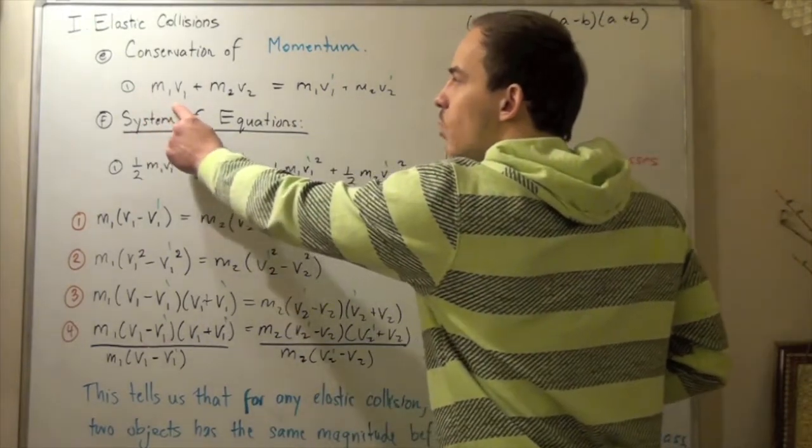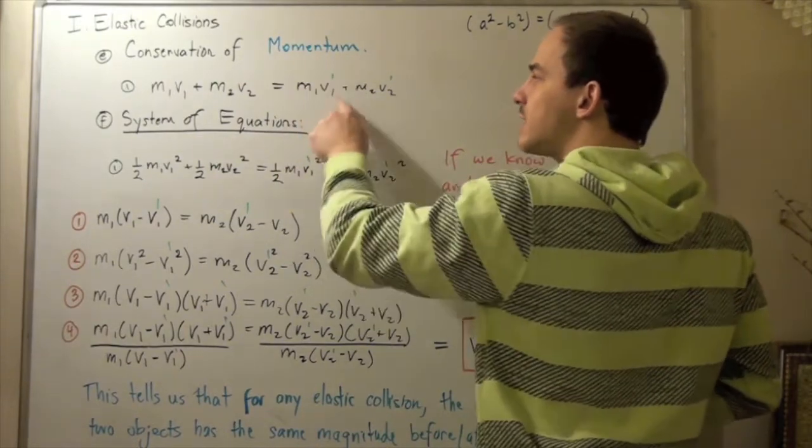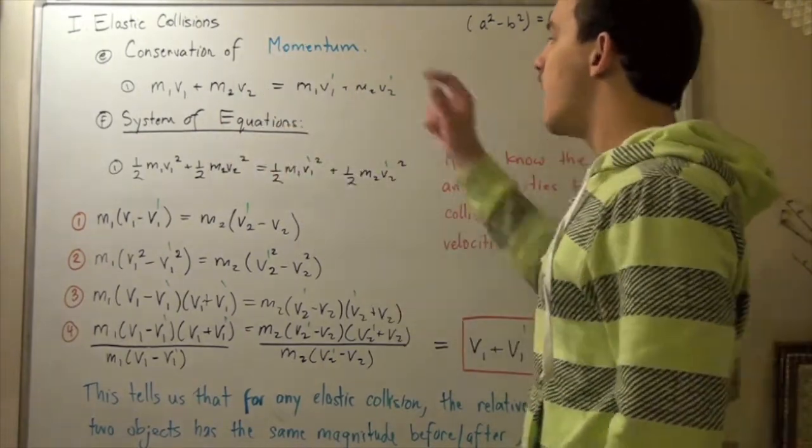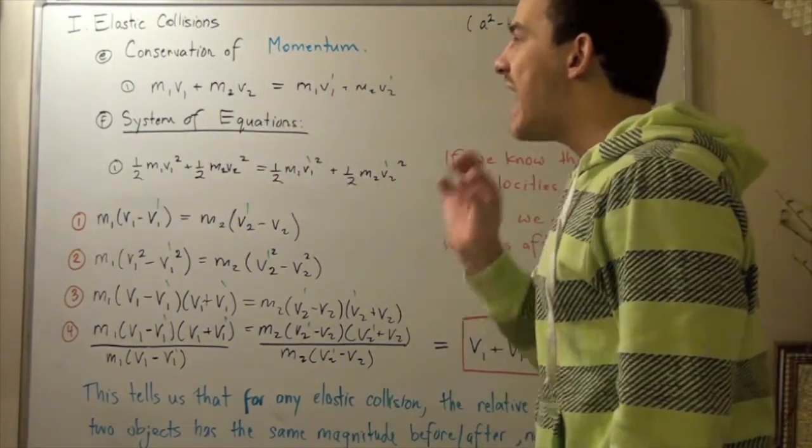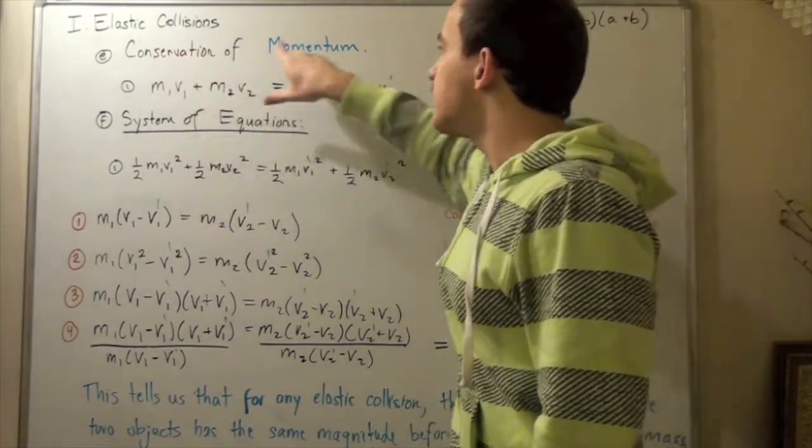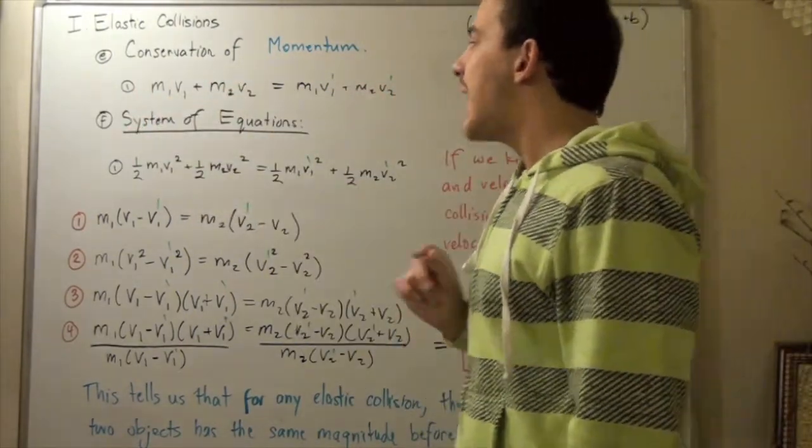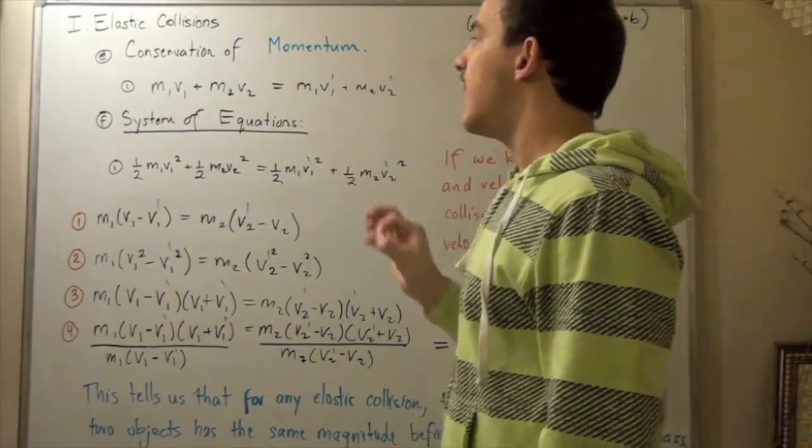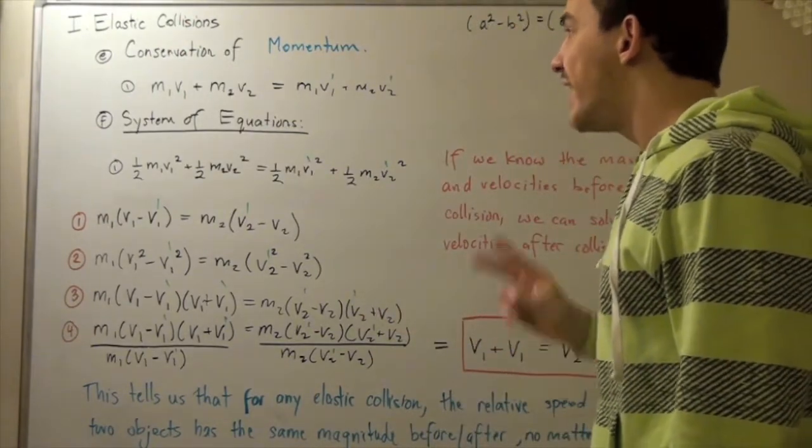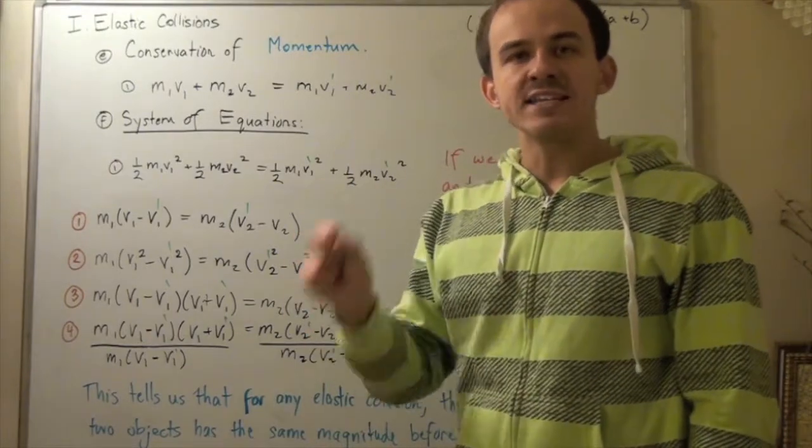m₁v₁ plus m₂v₂ equals m₁v₁' plus m₂v₂'. Now we have a system of equations. We have one equation that comes from the conservation of momentum, and we have a second equation that comes from the conservation of mechanical energy. Now we have two equations, and that means we can solve for any two unknowns.